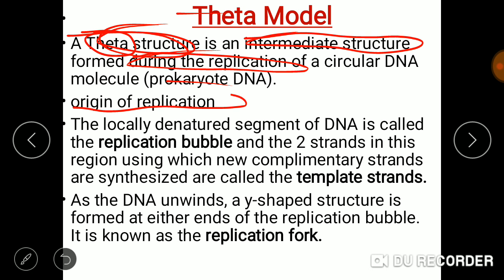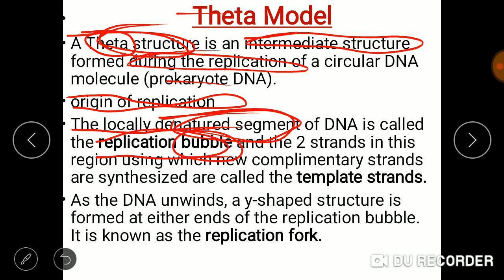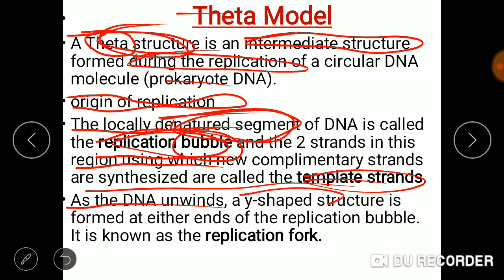The origin of replication — which I explained broadly in my previous video — is the locally denatured segment of DNA called a replication bubble. This denatured region forms a bubble-like structure. Two strands in this region are used to synthesize new complementary strands, and these two strands are called template strands. As DNA unwinds, the replication bubble forms and DNA unwinds and twists.